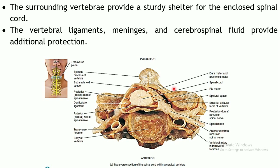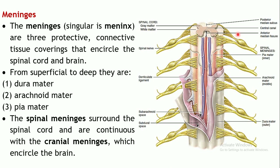This is the actual picture of a vertebra with a spinal cord passing through the vertebral foramen. Apart from these protective layers, there are also vertebral ligaments, meninges, and cerebrospinal fluid providing additional protection to the spinal cord.